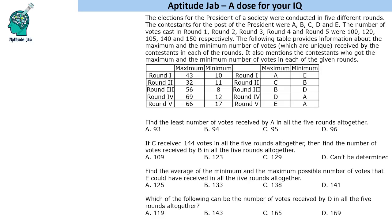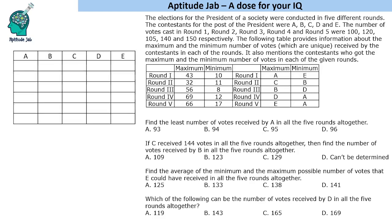In this kind of question, we basically need to find out the possible values of the remaining 3 people. We are given maximum A and minimum E. What about B, C, D? They will have a certain range of votes. For each round, we will have to find that range. This is how we shall do it.